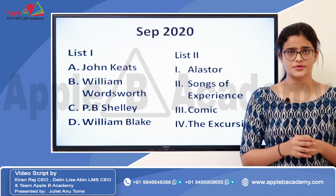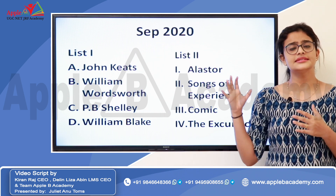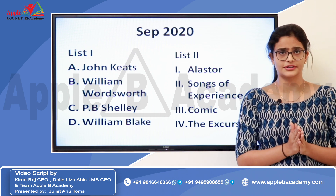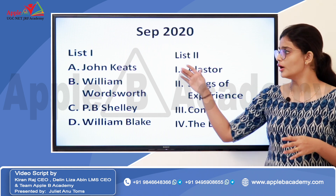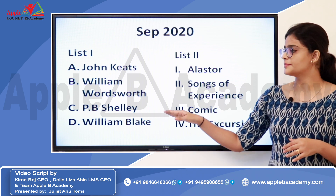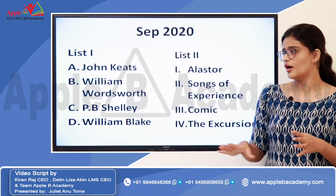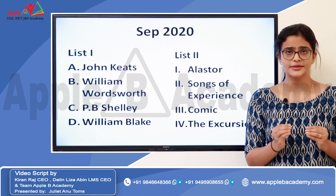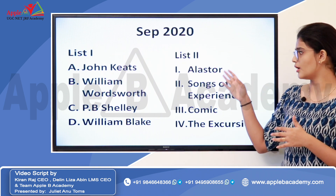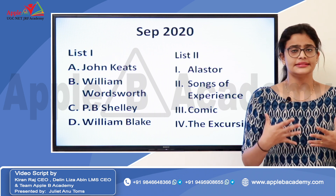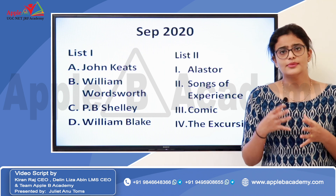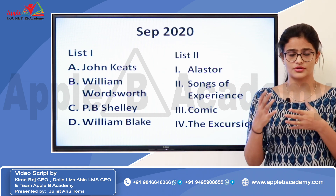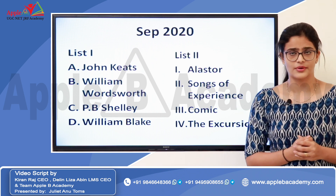Another question in September 2020 was a match-the-following type. As I said, all writers of the Romantic and Victorian periods have equal importance. This question managed to cover almost four writers — John Keats, William Wordsworth, P.B. Shelley, and William Blake — in a single question. You have to remember even the names of the poems: Alastor, Songs of Experience, Comic (Comus), and The Excursion are not the magnum opuses of these writers but are equally important works.